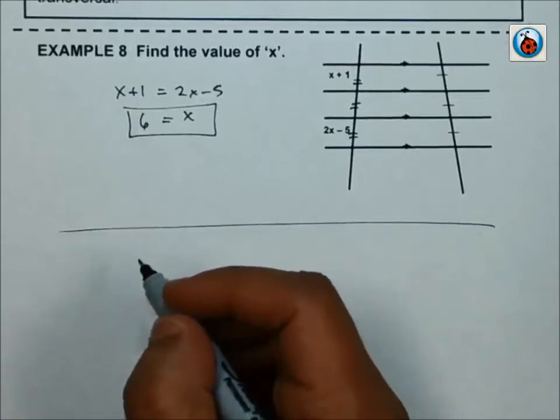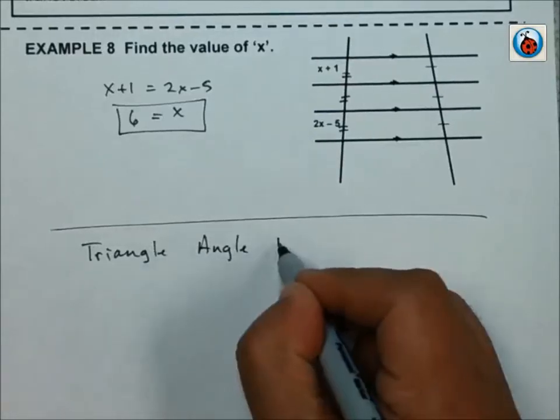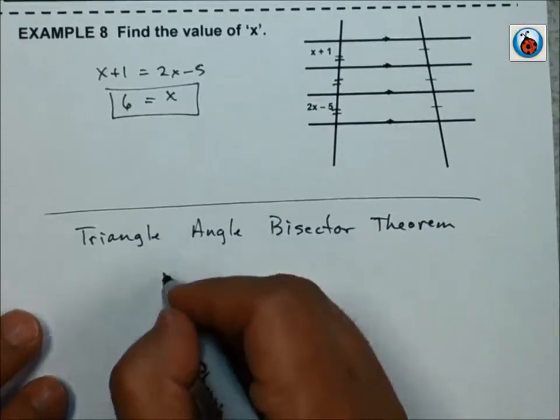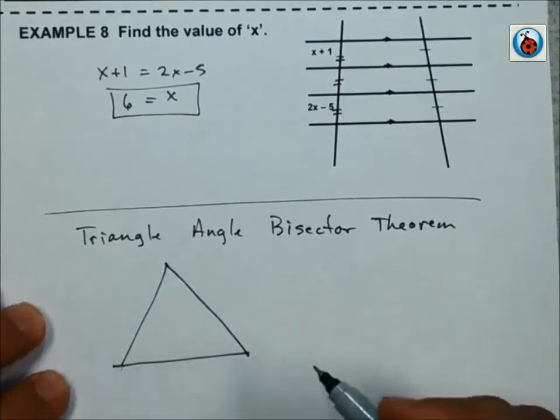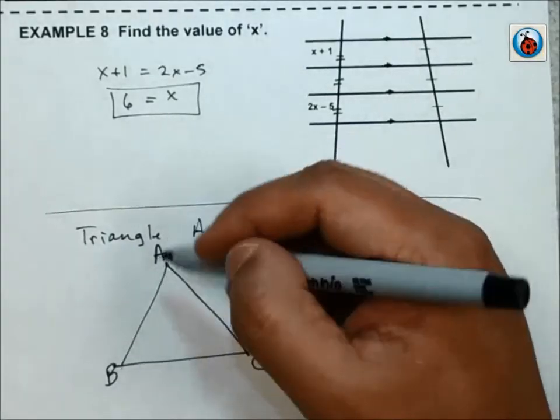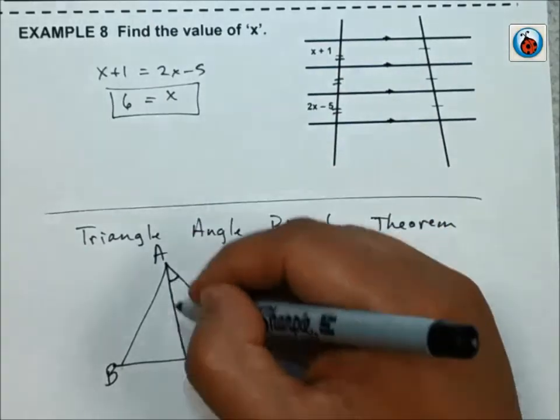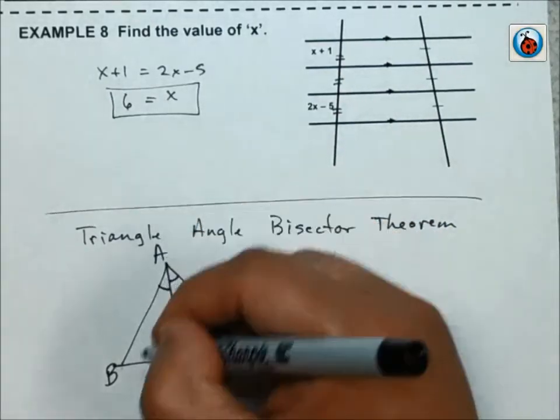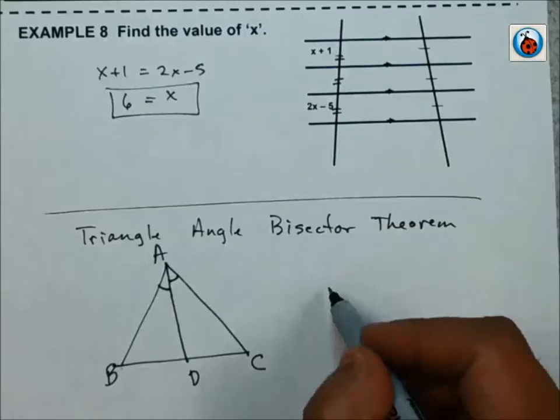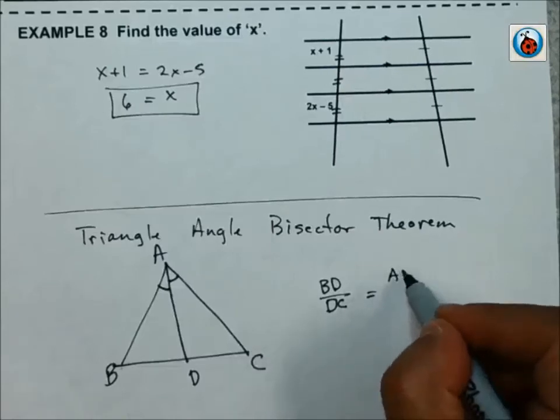We need to talk about what's called the Triangle Angle Bisector Theorem. All it says is if I have a triangle, we'll call it triangle ABC. And I come up with an angle bisector. So if I know that this segment AD bisects this angle, so angle DAC is going to be congruent to angle BAD. So if these two angles are equal, it creates another proportion that I can use. I can set up BD over DC, that ratio equals AB over AC.